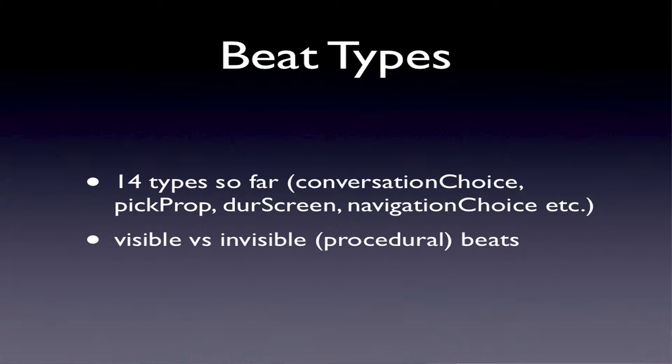There are also invisible beads that do things behind the scenes — they work with procedural values. With these you can, for example, check the status of the inventory, check if a character has a certain item, check something like a timer running, or track a certain progression of a character trait.